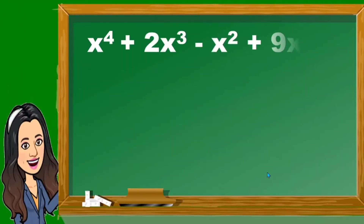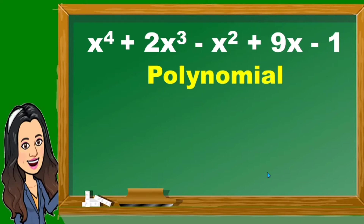Let us have this example. Given x raised to 4 plus 2x cubed minus x squared plus 9x minus 1. This is a polynomial. Why? Because if you're going to observe their exponents, the exponents are all positive and at the same time whole numbers.